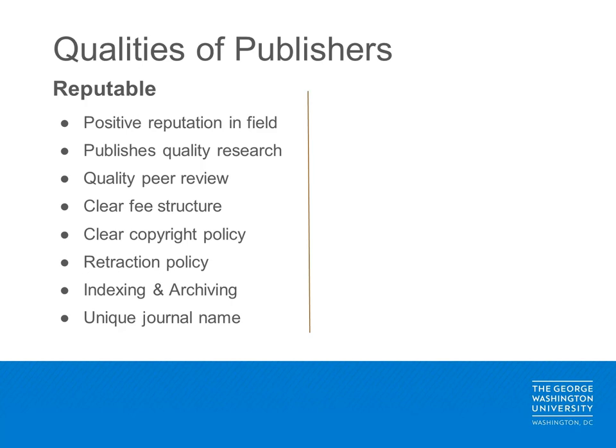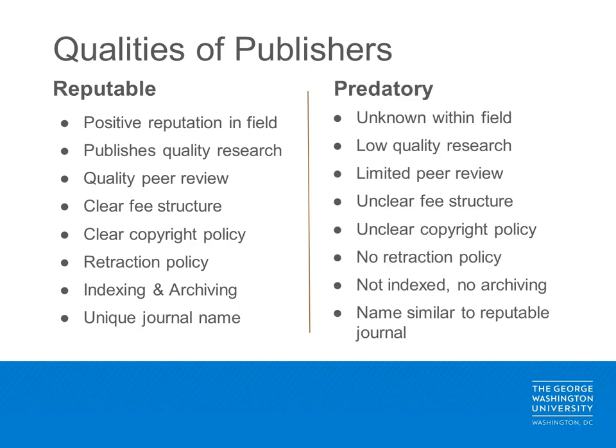Let's compare the qualities of reputable journals versus those of predatory journals. Reputable publishers have a positive reputation within the field, a history of publishing quality research based on sound science, a rigorous peer review process, and clear copyright, retraction, indexing, and archiving policies. Predatory publishers, on the other hand, publish poor quality research; even if they claim to follow peer review, it is unlikely articles receive any review prior to publication. Fee structures are not clear and are often misleading, and policies on copyright, retraction, indexing, and archiving are often non-existent or unclear.